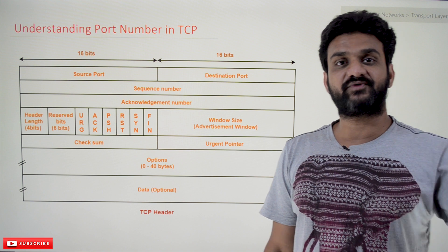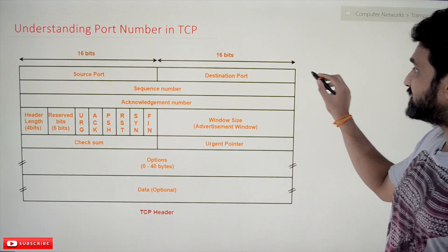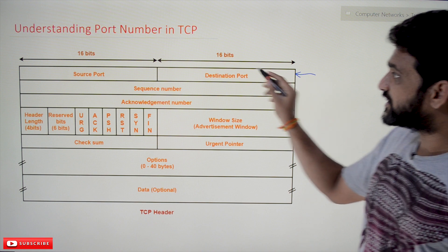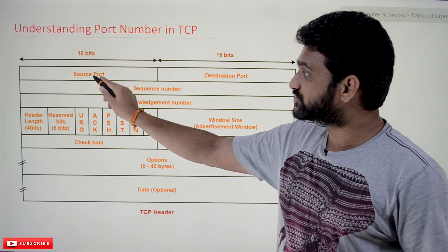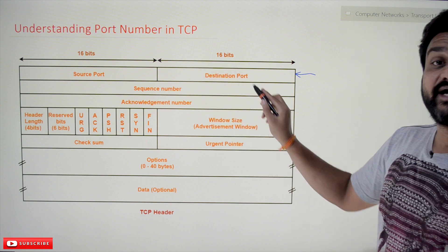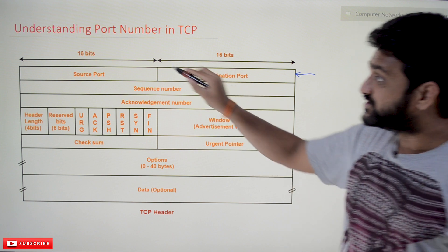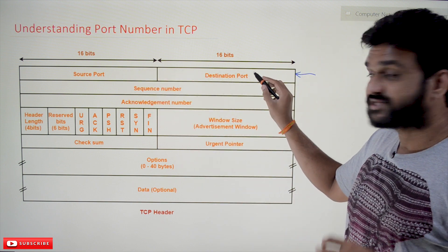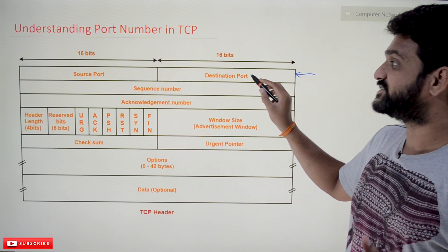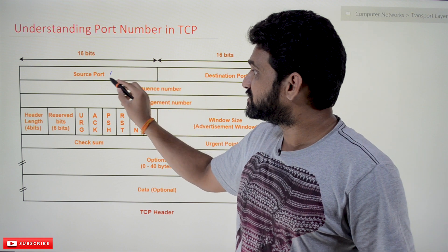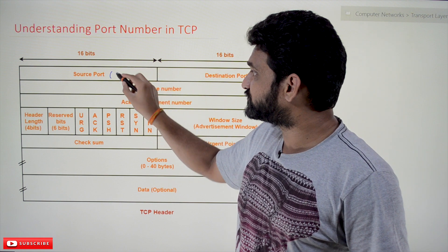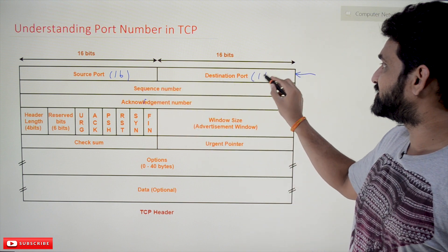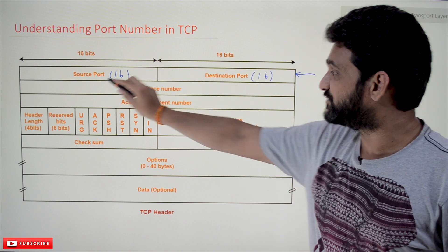In this video we'll try to understand the first row of the TCP header. In this first row we have two columns: one is source port, the other one is destination port. These are the port numbers that are randomly generated by the source and destination. The source port is of size 16 bits and the destination port is also 16 bits.